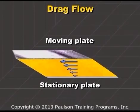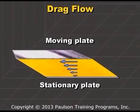Lower down, the plastic moves at an even slower velocity, and so on, until at the stationary plate the plastic does not flow at all. So the velocity profile looks like this, and since the plastic is being dragged by one plate past another, it is called drag flow.